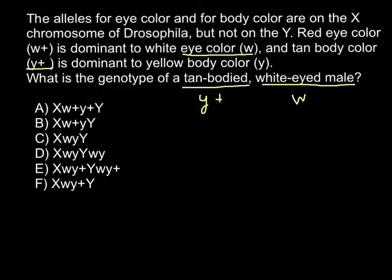And let's once again take a look at our choice of answers, and we can cross out answers D and E right away, because these answers give us the possibility that these two genes are present both on the X chromosome and Y chromosome. And as you see from the problem, the alleles for eye color and body color are on the X chromosome of Drosophila, but not on the Y chromosome. So this is why we can cross out answers D and E.